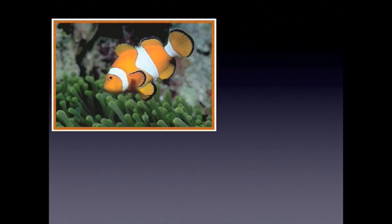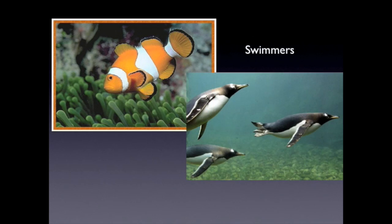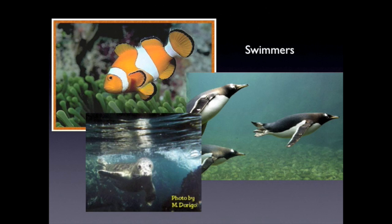How about things that swim? Here's a fish — you naturally think of a fish as being able to swim, but here are some birds that swim, and here are some mammals that swim. They all have similar body styles, similar structures. If they're going to swim effectively, there are going to be certain structural characteristics that they're going to share.